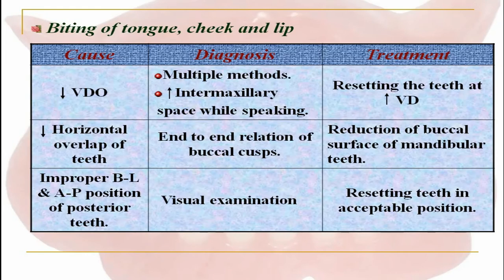Tissue irritation could be due to cheek biting, lip biting, or tongue biting. The most common cause of cheek biting is the presence of inadequate overjet between the maxillary and mandibular anterior teeth; it can be corrected by increasing the overjet by reducing the buccal surfaces of lower posterior teeth. Cheek biting is also due to loss of vertical dimension, causing cheeks to occlude between the occlusal surfaces of the dentures. Tongue biting can be treated by reducing the palatal surfaces of the maxillary posterior teeth, mostly the maxillary molars.